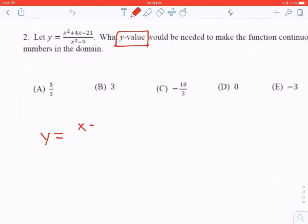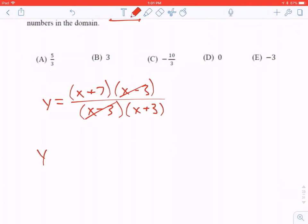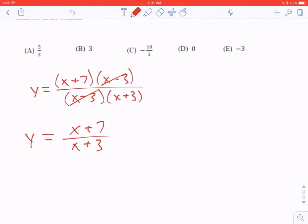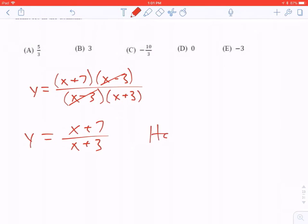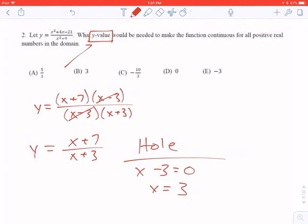So the top is going to factor into an x plus 7 and an x minus 3. The bottom is a difference of two squares. The x minus 3 is cancel. Hole. It's kind of like goal in soccer, but you're not European, so you don't even know that. There's a hole at the x minus 3 equals 0. There's a hole at x equals 3. The problem asks for a y value.